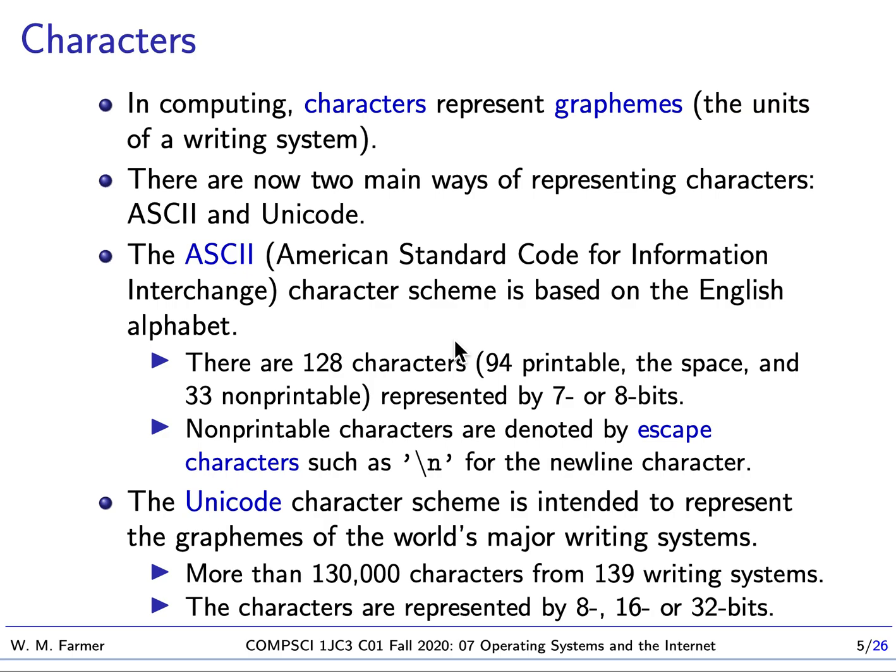ASCII is a very simple approach based on the English alphabet — specifically on the symbols from the English alphabet on an old American typewriter. There are 128 characters: 94 are printable, there's a space character, and 33 are non-printable control characters that control how printing is done. Since there are 128 characters, they can be represented by either 7 or 8 bits.